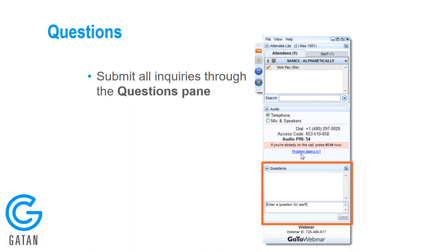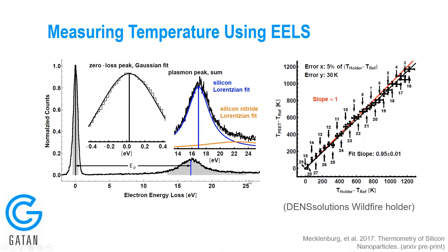Regarding the accuracy of using plasmon peak shifts and EELS to measure temperature — I'm not sure I know that off the top of my head. This paper shown here will give the answer; in the bottom right hand corner is where you can find that paper on arXiv. That paper discusses the accuracy in some detail. Please refer to the published data for that, and if you have a more specific question, submit it and we can answer offline as well.